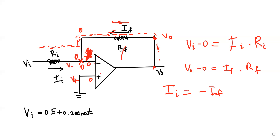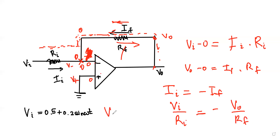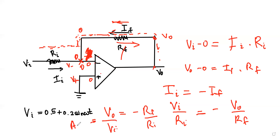The current through Ri is the same magnitude as the current through Rf, but the direction is different — so Ii equals minus If. Substituting, Ii = Vi / Ri and minus If = V-node / Rf. Simplifying, we get V-output / Vi equals minus Rf / Ri.